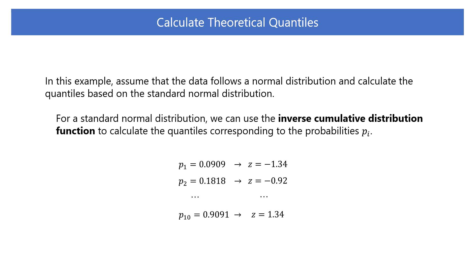Next, calculate the theoretical quantiles. In this example, we assume that the data follows a normal distribution, and calculate the quantiles based on the standard normal distribution. For a standard normal distribution, we can use the inverse cumulative distribution function to calculate the quantiles corresponding to the probabilities, p_i.